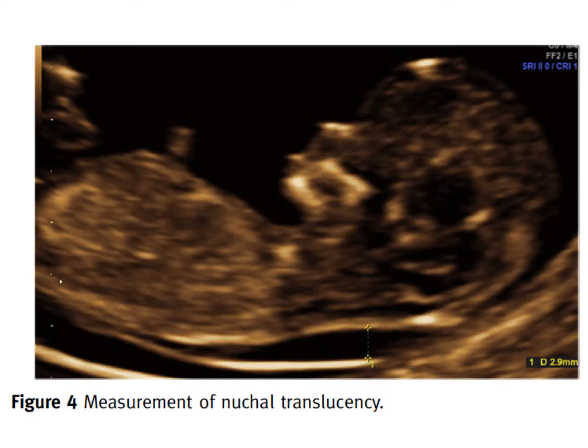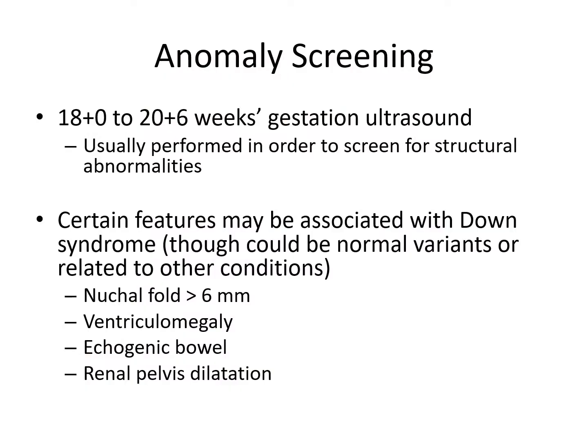Here is an example of nuchal translucency measurement. Looking at the fetus from the side, we can see the head, and behind the neck is a translucent space related to lymphatic development. This space tends to be thicker in Down syndrome and other aneuploidies. This particular slide shows a nuchal translucency of 2.9 millimeters. We use gestation-normalized charts rather than a single cutoff to interpret the measurement.